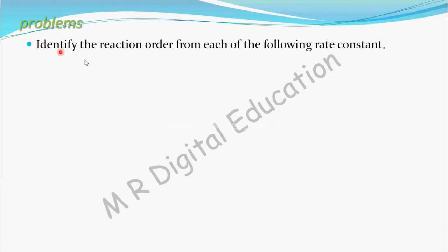Let's see a problem on unit of rate constant. Identify the reaction order from each of the following rate constants. k equals 2.3 times 10 to the power minus 5 liter per mole per second.